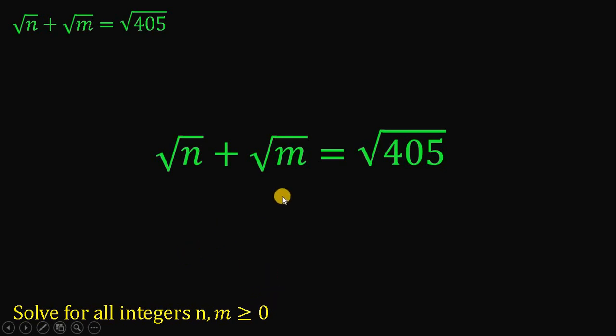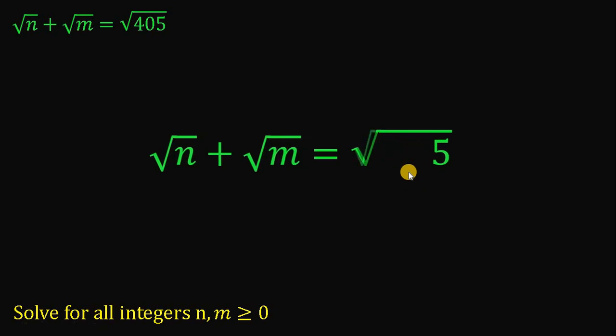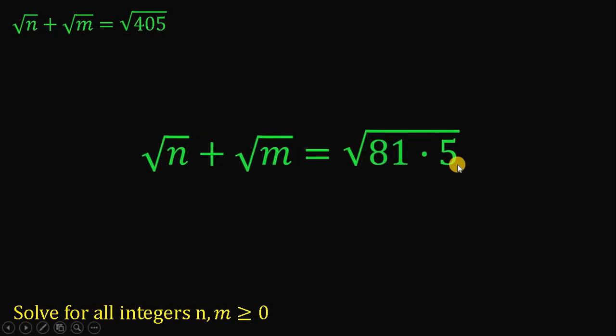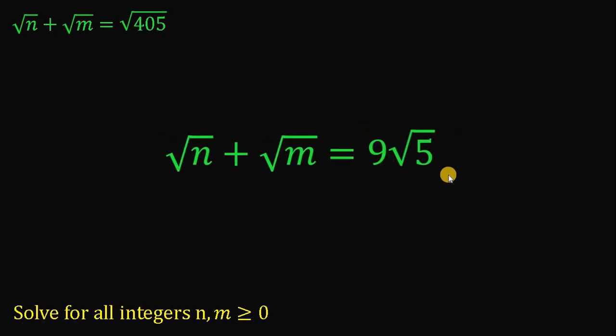To start our solution, let's focus on this 405. Take note that 405 is just 81 times 5. Why 81? Because 81 is a perfect square. 81 is just 9 squared. So, the right-hand side of this equation can be written as 9 times square root of 5.